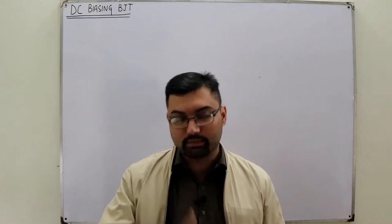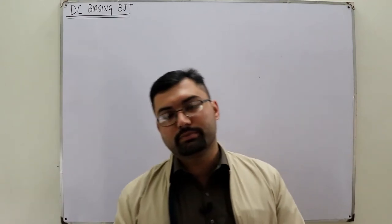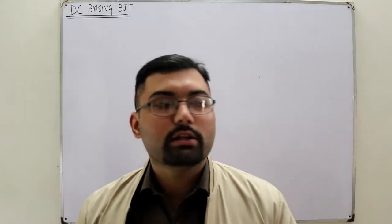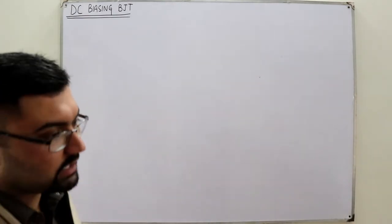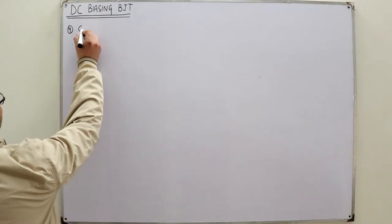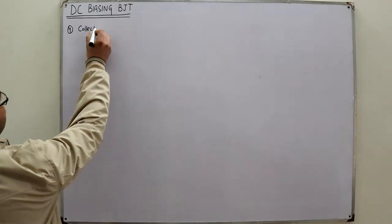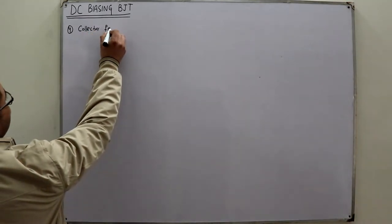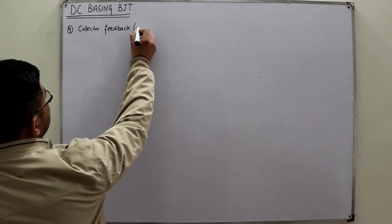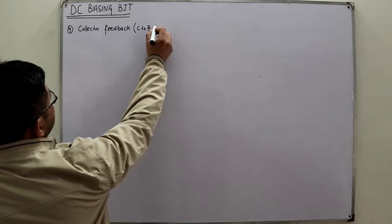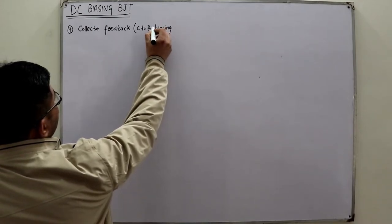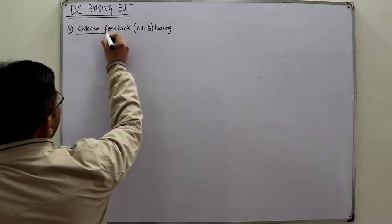Bismillah ar-Rahman ar-Rahim. Assalamu alaikum, welcome to Salah Khan YouTube channel. Continuing the topic of BJT biasing — we've seen three biasing types, today we see the fourth: the collector feedback biasing, also called collector-to-base biasing.